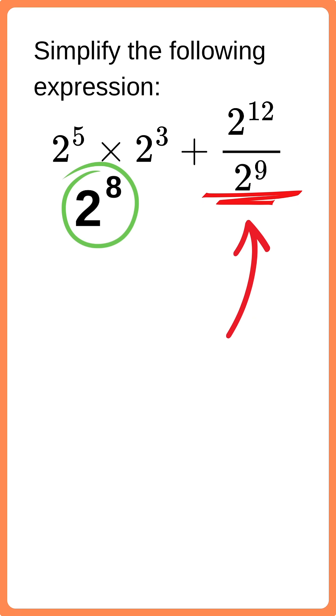So, we'll get 2 to the 12 divided by 2 to the 9 equals 2 to the power of 12 minus 9, or 2 to the power of 3.